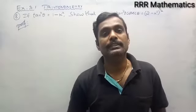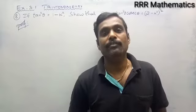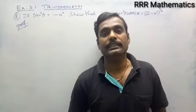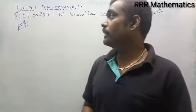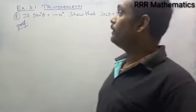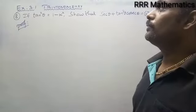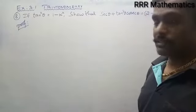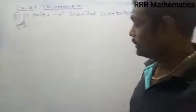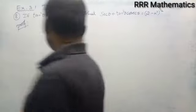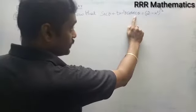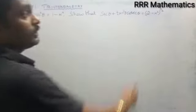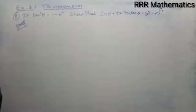Hi dear students, today we will discuss Chapter 3, Trigonometry, Exercise 3.1, Question Number 8. If tan squared theta equals 1 minus k squared is the given condition, we want to show that secant theta plus tan cube theta into cosecant theta is equal to 2 minus k squared, whole power 3 by 2.